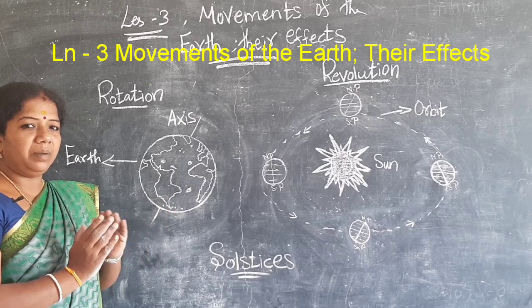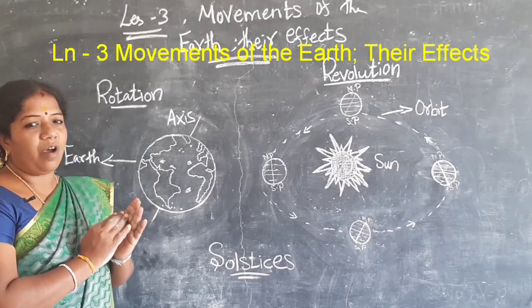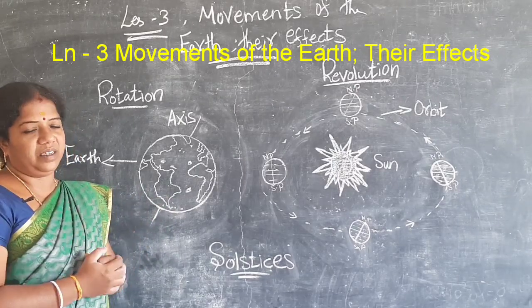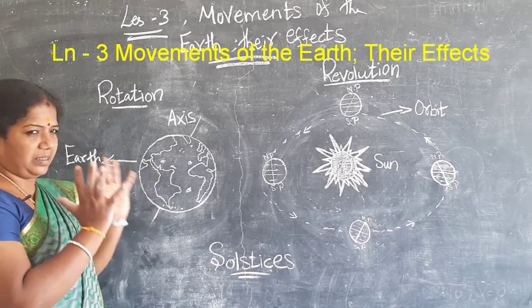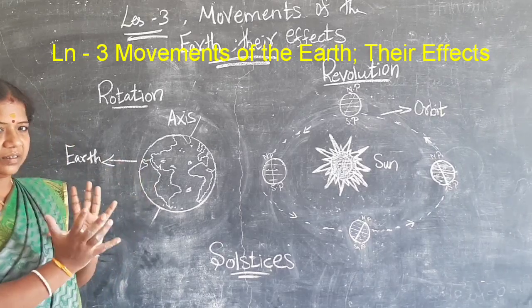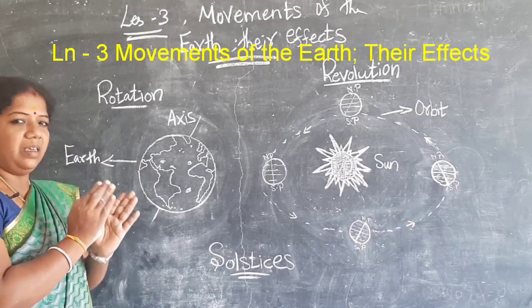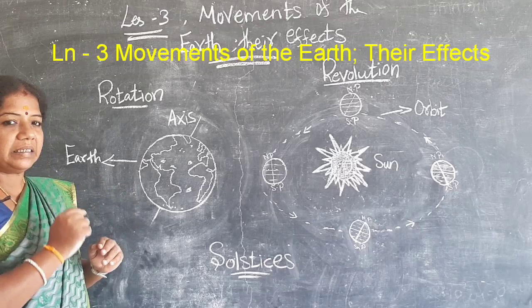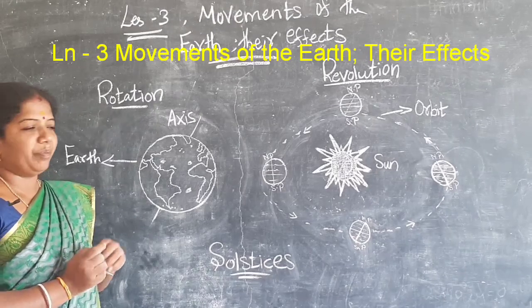Likewise, the earth rotates on its own axis, but it is tilted a little bit — at an angle of 66 and a half degrees. It is not a perfect upright circle; it is slightly tilted at 66 and a half degrees.